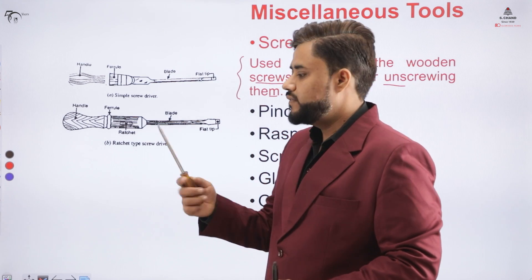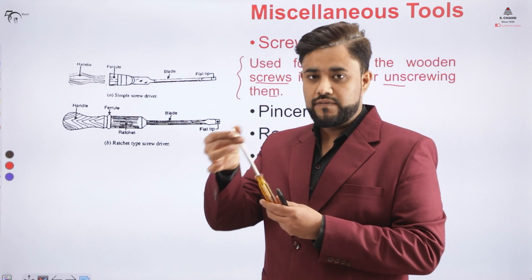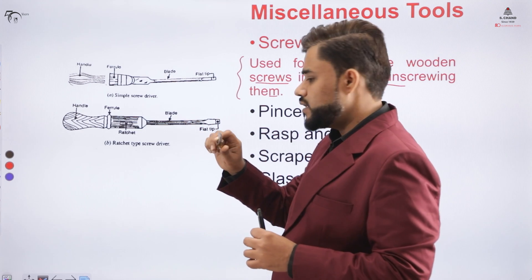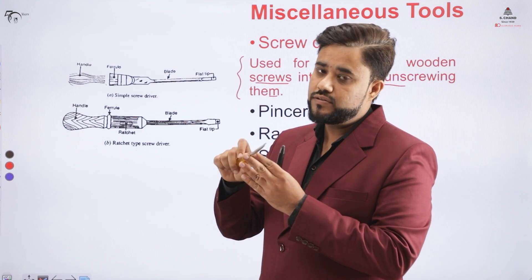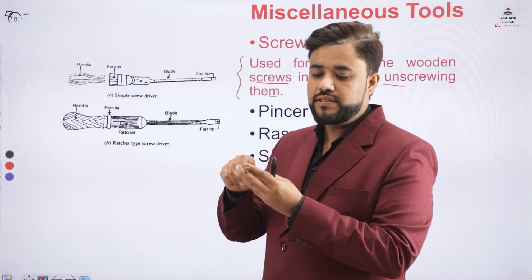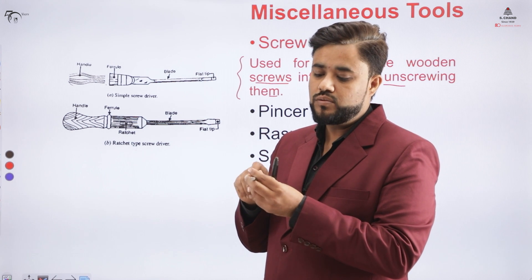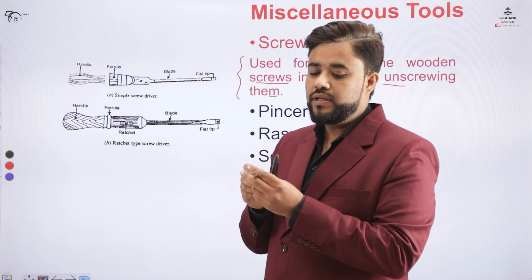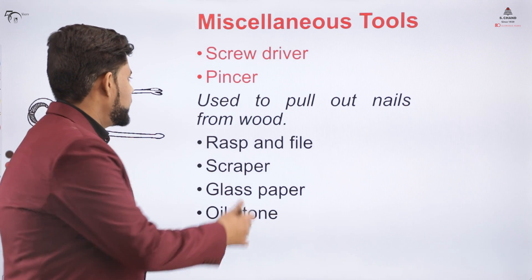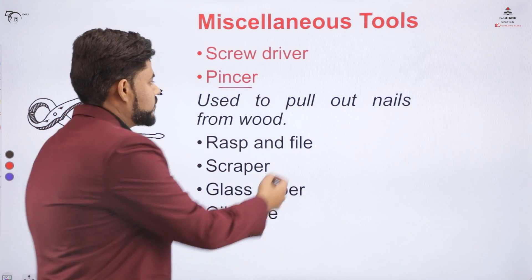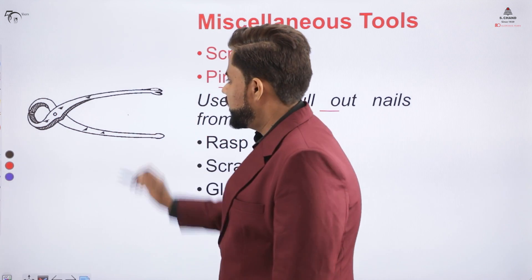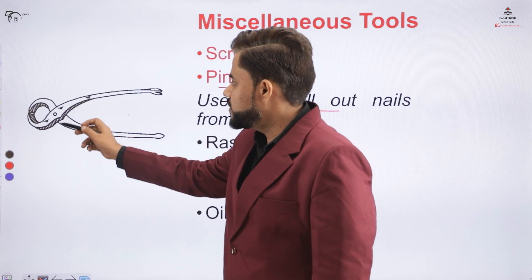This is a screwdriver which has a flat tip, and this flat surface is used to drive screws into the wood for joining operations. It has a handle, and the carpenter rotates it while fixing it on the screw so that the screw goes into the wood or can be removed from the wooden surface. The pincer is a tool used to pull out nails from the surface of the wood.